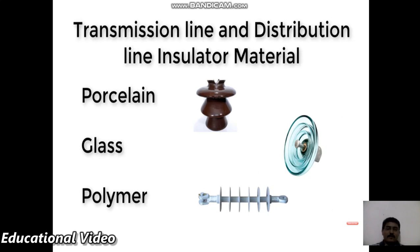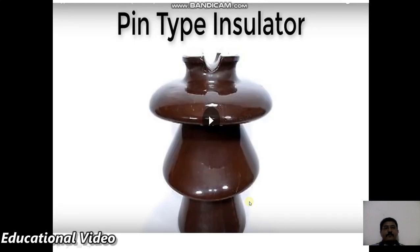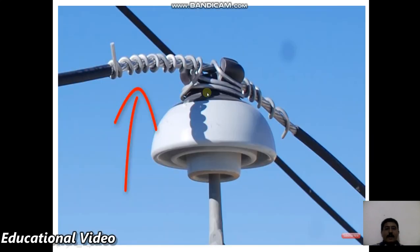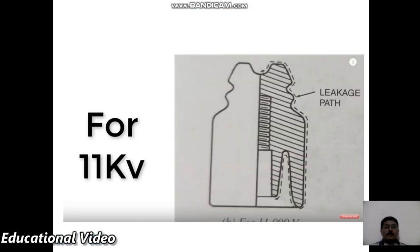Transmission and distribution line insulating materials include porcelain, glass, and polymers. Porcelain and polymers are most widely used today, with polymers preferred because they are lighter in weight compared to porcelain. The pin insulator has a groove at the top where the conductor is placed and held securely.